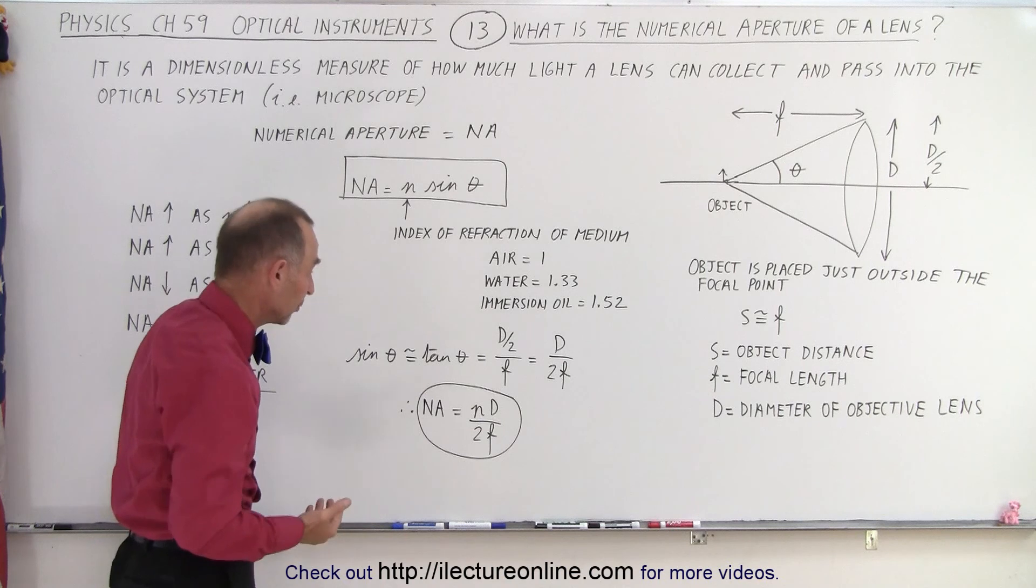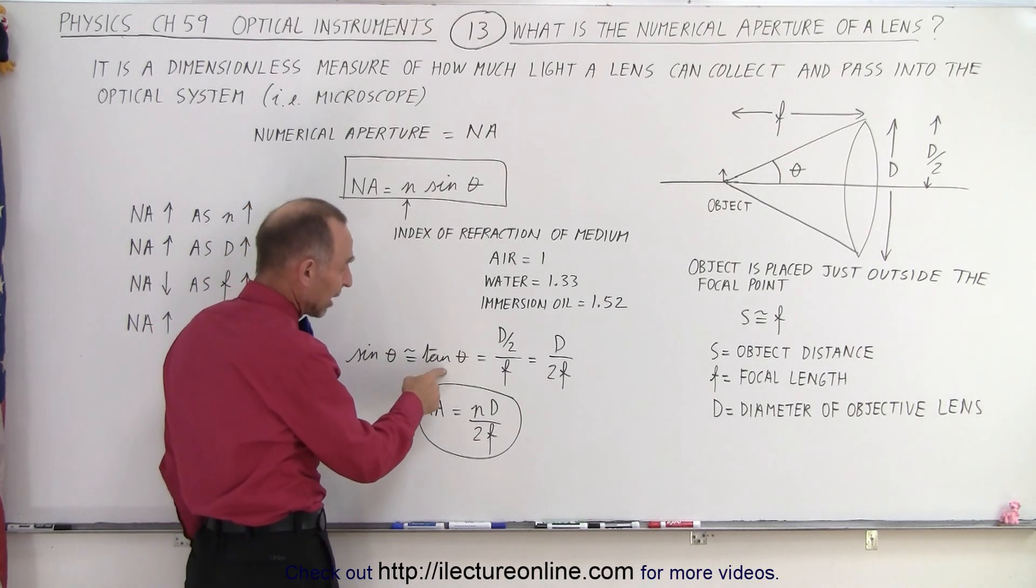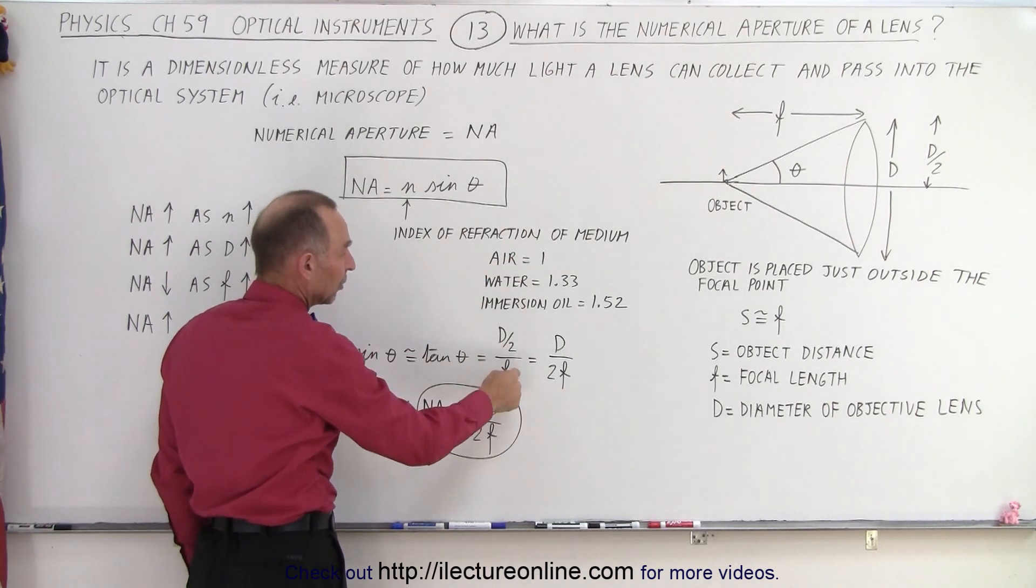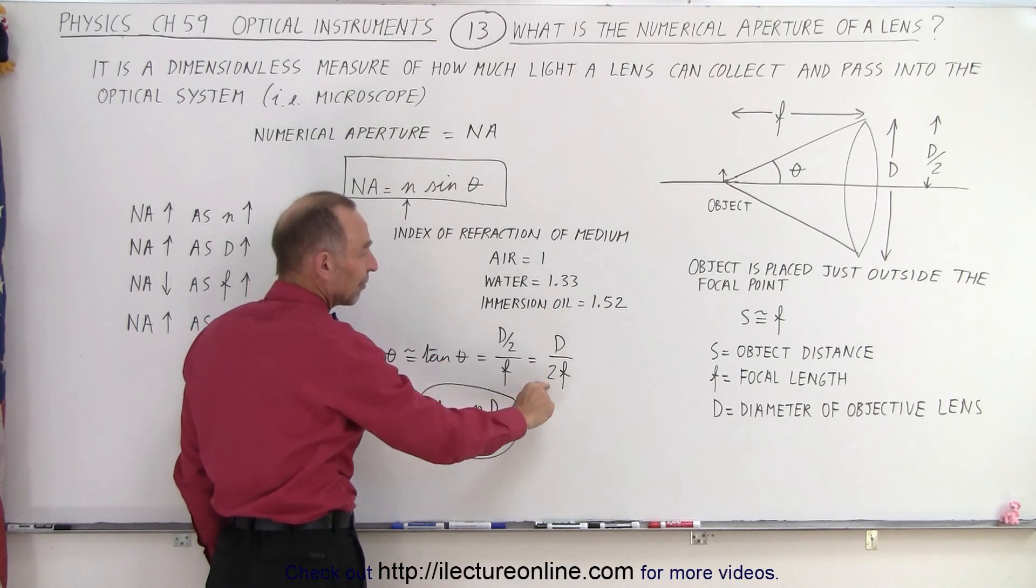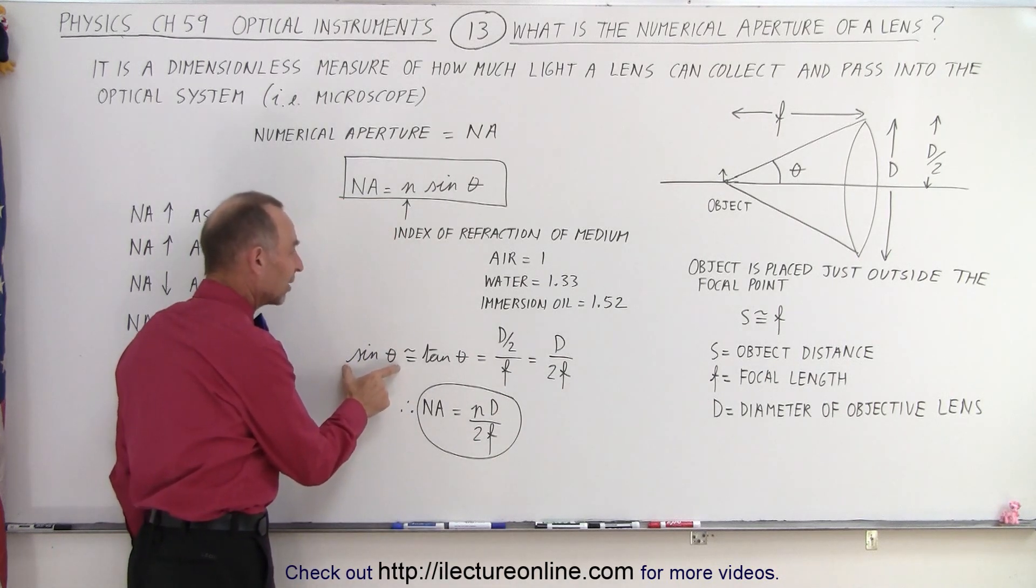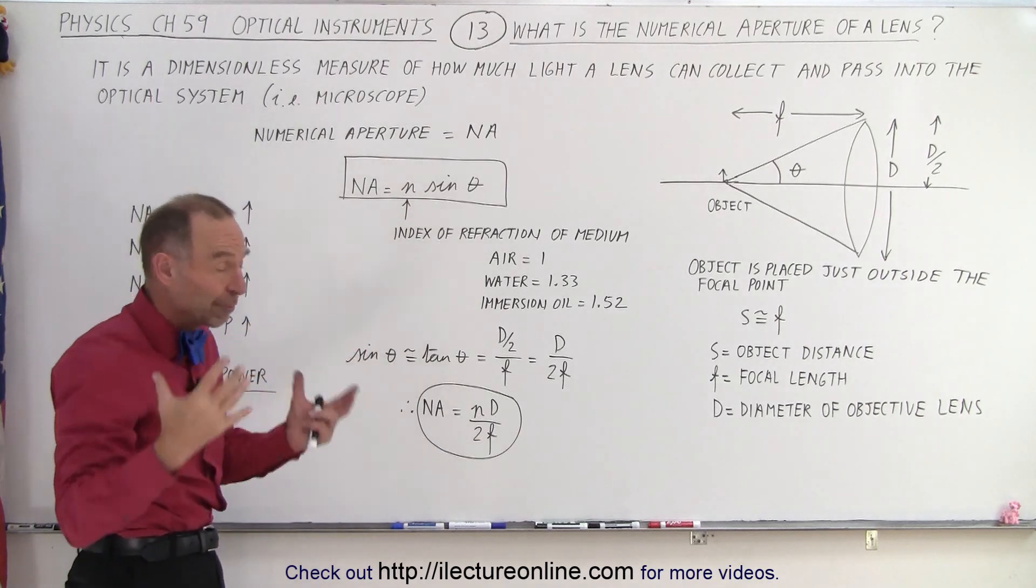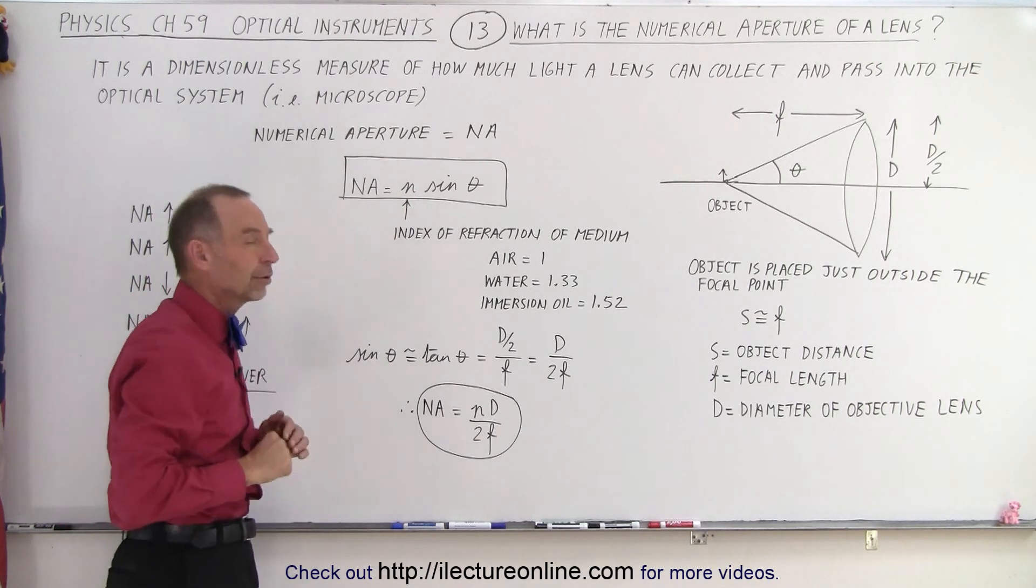Now for small angles, and these are going to be small angles, notice that the sine of theta is approximately equal to the tangent of theta, which is the opposite side over the adjacent side. So the opposite side would be D over 2. Adjacent side would be F. And so essentially it's D, the diameter of the lens, divided by twice the focal length of the lens. That is going to be equal to the sine of theta. That is then multiplied times the index of refraction of the medium, which gives us the NA, the numerical aperture.